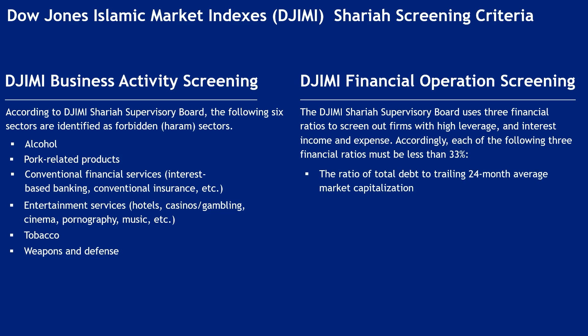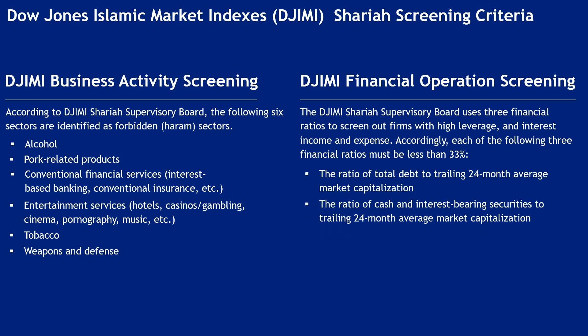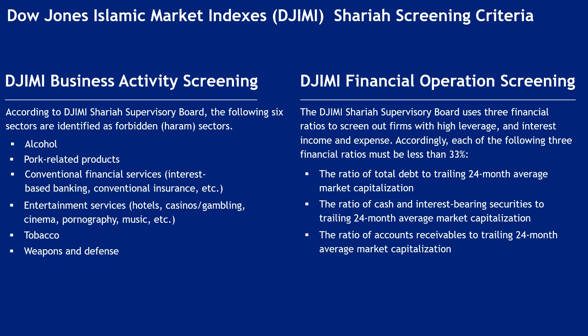The three financial ratios applied are: the ratio of total debt to trailing 24-month average market capitalization; the ratio of cash and interest-bearing securities to trailing 24-month average market capitalization; and the ratio of accounts receivables to trailing 24-month average market capitalization.